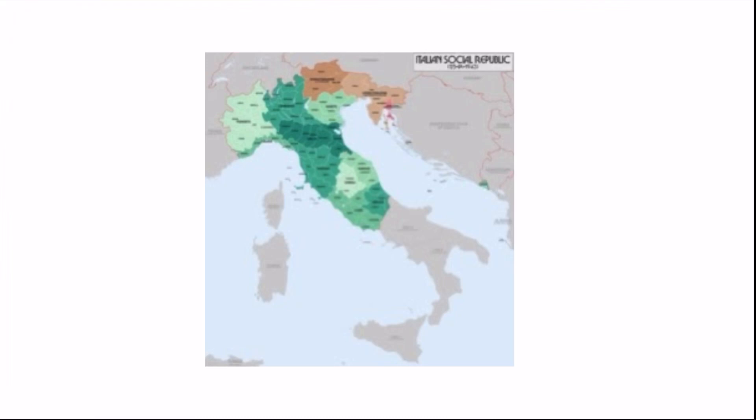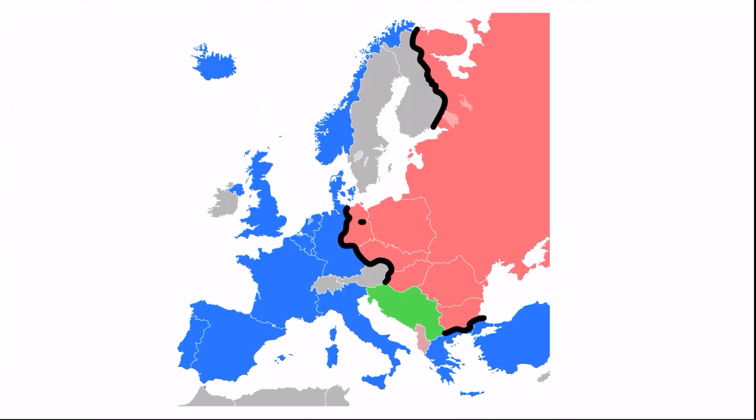And with that, the Cold War began. Italy is here in blue, as they were a capitalist country during the war. But at the very beginning of the Cold War, the Kingdom of Italy held a referendum.